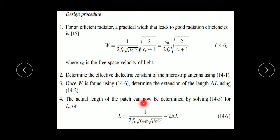In this formula, we put the resonant frequency and the effective dielectric constant, which is calculated by equation 14.1. Then we subtract 2ΔL — the fringing effect length for both slots. This gives the actual length of the antenna, calculated using this formula.